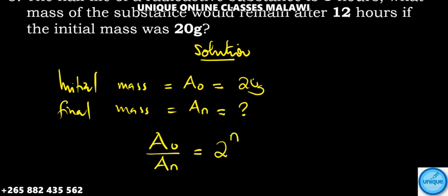What we need to do first is find the number of half-lives in 12 hours. Since each half-life is 3 hours, we divide 12 hours by 3 hours, which gives us 4.